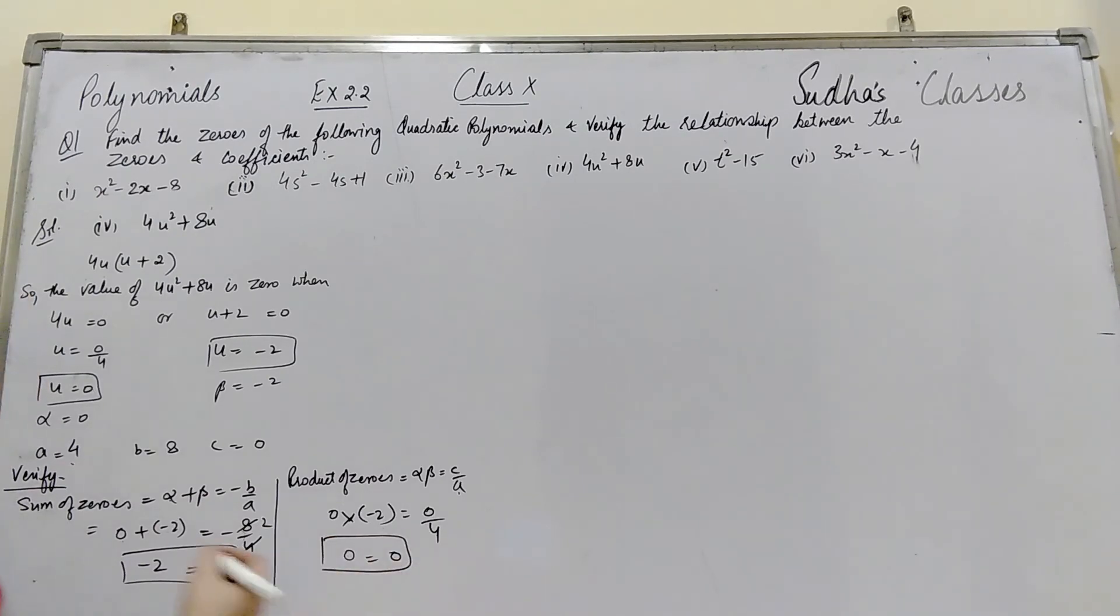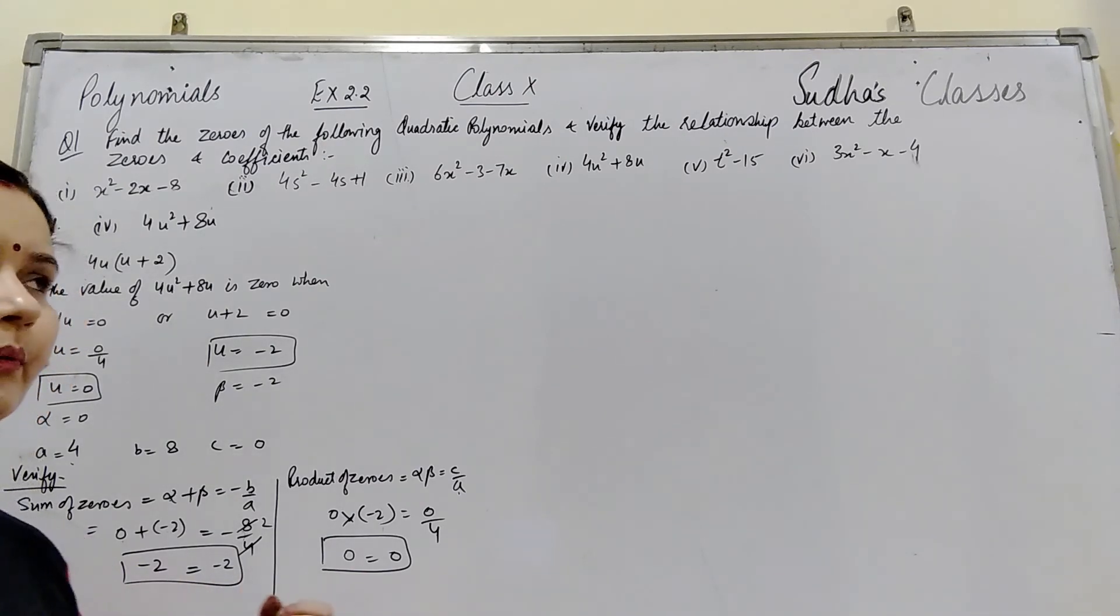So here the sum of zeros is equal and the product of zeros is equal. When we have verified both, we know that this polynomial is a quadratic polynomial and we have verified the relationship between zeros and coefficients.